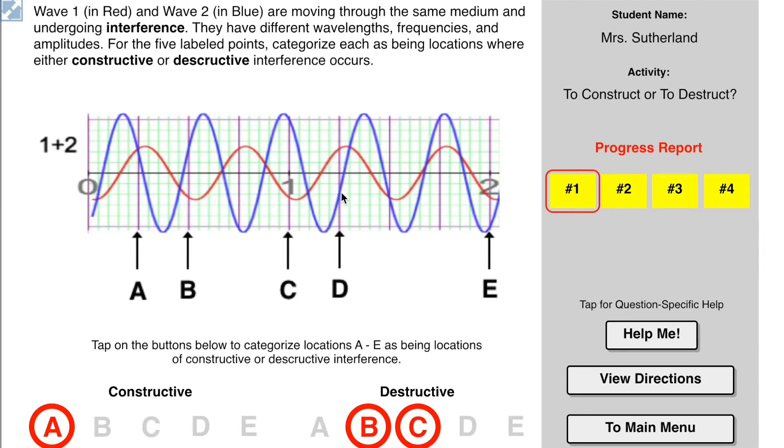D, red is above, blue is below, that's destructive. For E, red is below and blue is below, so they're both below. They're going to add together, and that's E.